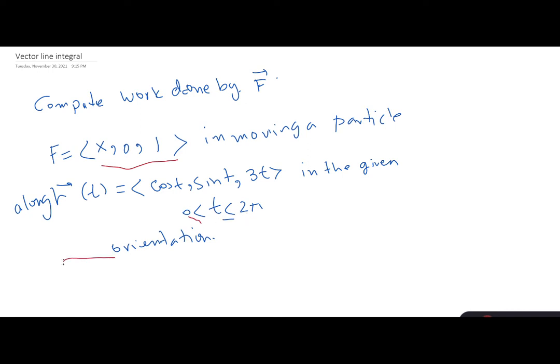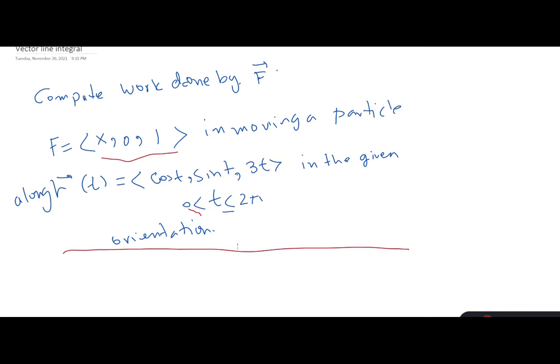So how do we go about this? Any vector line integral - work done by F is going to be a vector line integral. We start by using the parametrization and finding R prime of T.